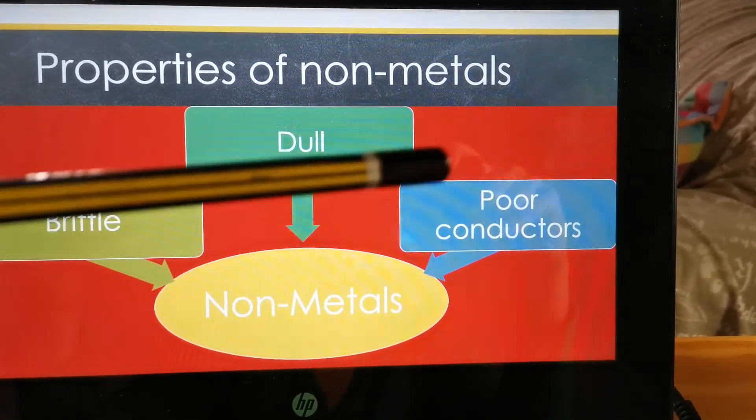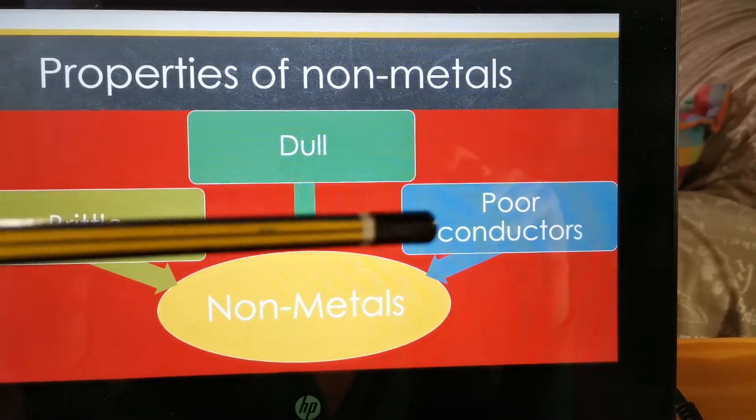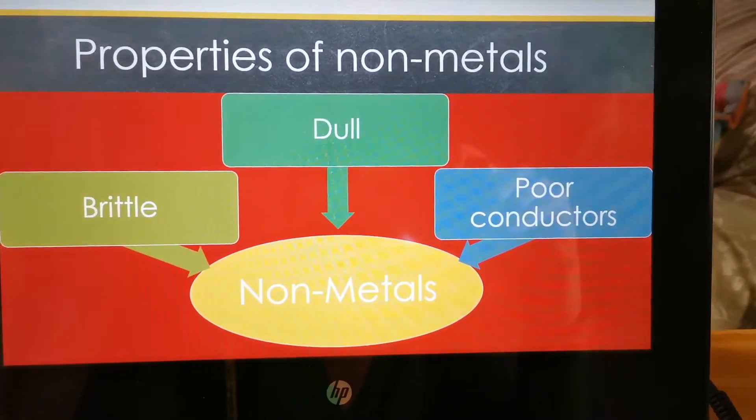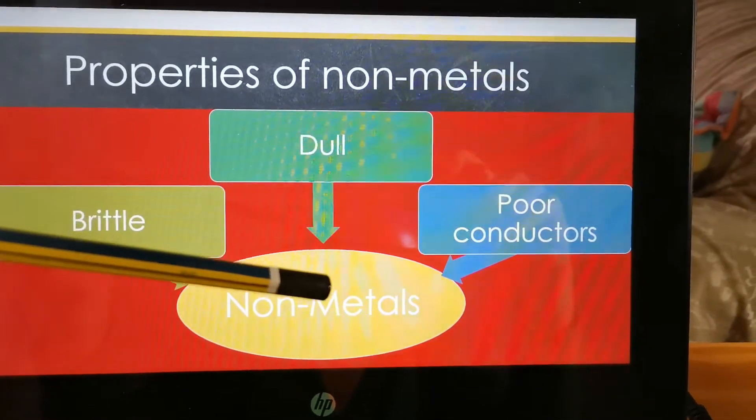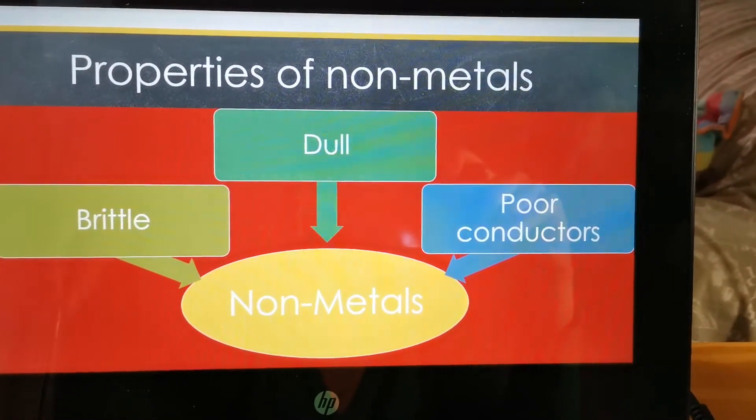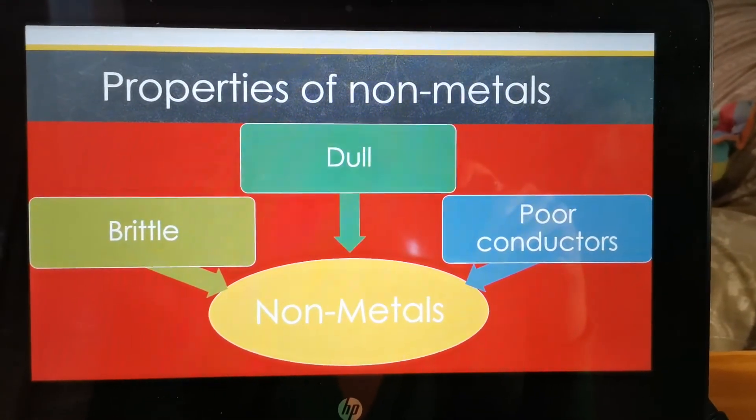And then we have, they are poor conductors. So, they cannot carry heat and electricity very easily. So, they are poor conductors. But if you go back and think about metals, they are good conductors. So, we can say that metals and non-metals are almost opposites.